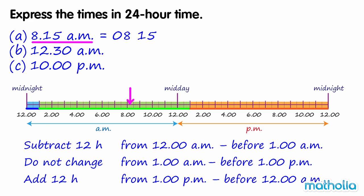12.30am is located in the blue zone, so we subtract 12 hours to give 0:30 hours.